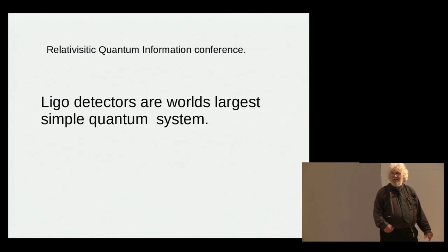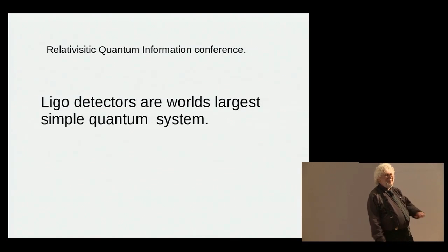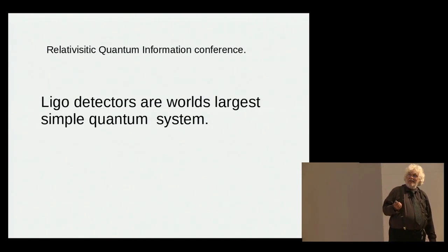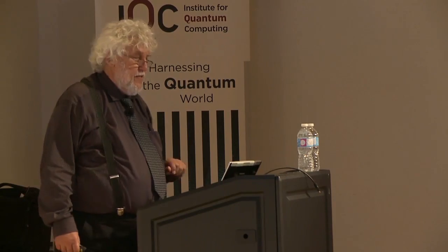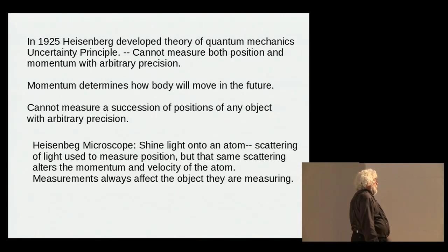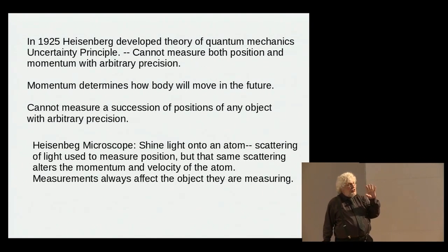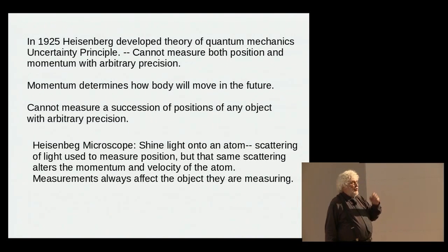Since we're at the Institute for Quantum something, the quantum is the important thing. One of the amazing things is that this system is one of the biggest quantum systems in the world. In 1925, Heisenberg developing quantum mechanics came up with what was called the Heisenberg microscope - a Gedanken experiment to understand a result he had derived: that one couldn't determine the position and the momentum - momentum being mass times velocity - of a particle with arbitrary accuracy at the same time.